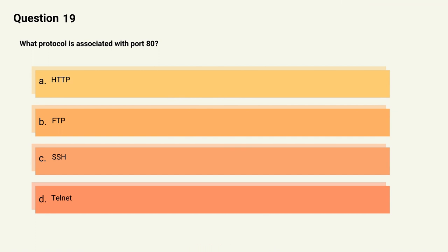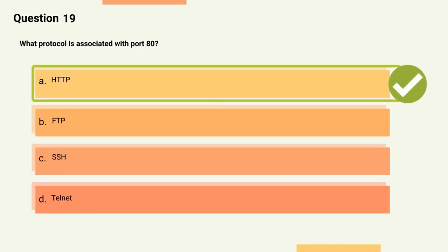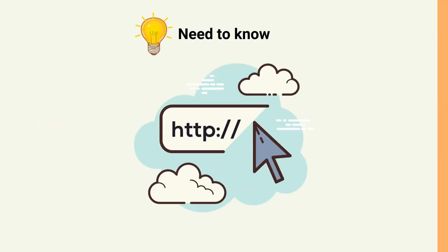Question 19: What protocol is associated with port 80? Options: A) HTTP, B) FTP, C) SSH, D) Telnet. The correct answer is Option A, HTTP. Explanation: Port 80 is the default port used by the HTTP protocol for web traffic.